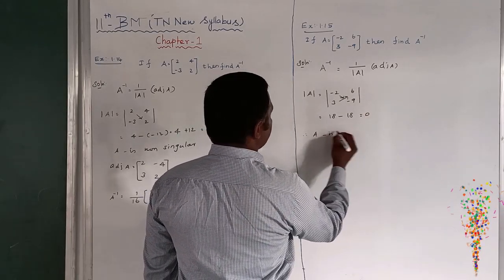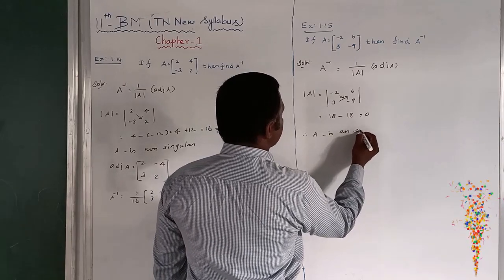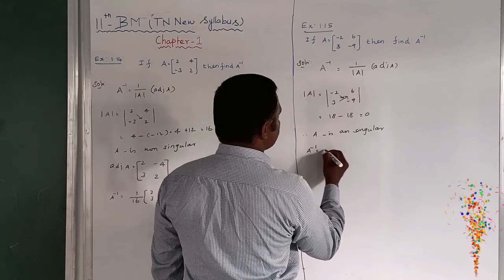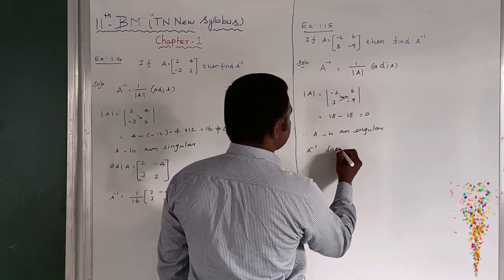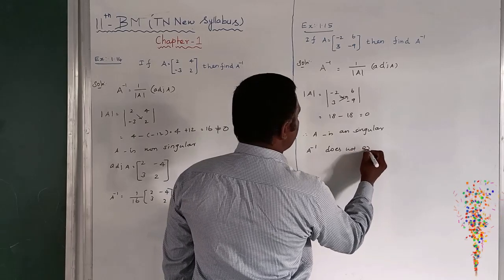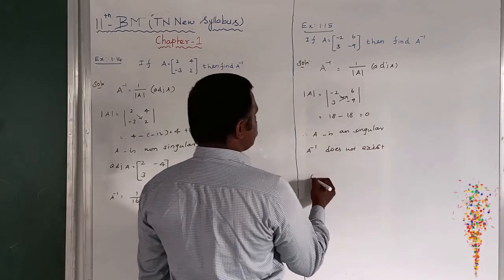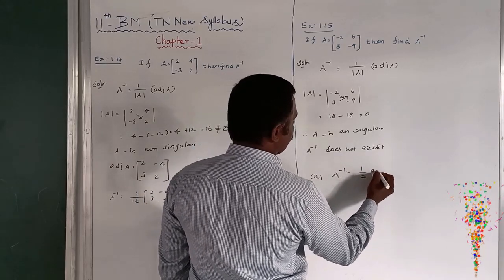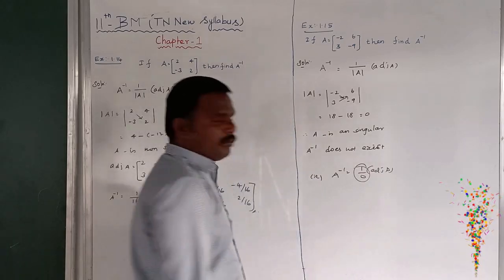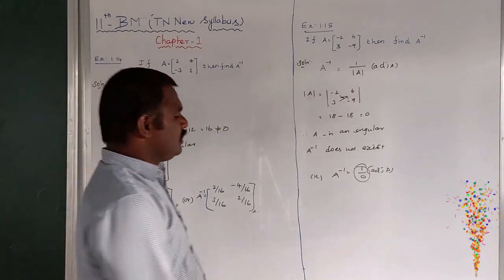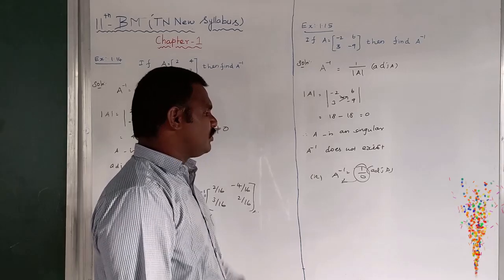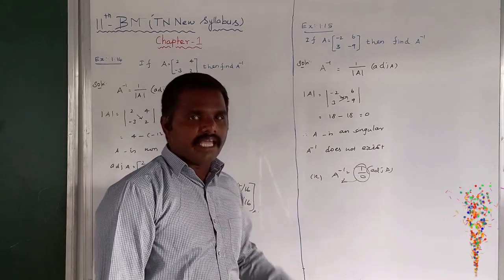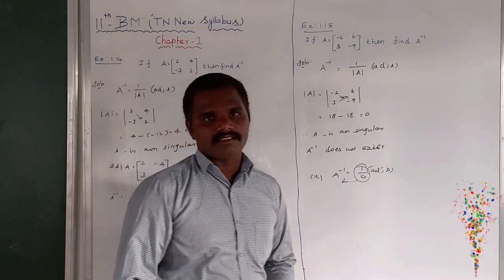Therefore, A is singular. So singular means A inverse does not exist. Because see that A inverse equal to 1 by 0 into adjoint of A means here 1 by 0 is not defined. So A inverse cannot be acceptable for this condition. Therefore, when A is singular, A inverse does not exist. Thank you.